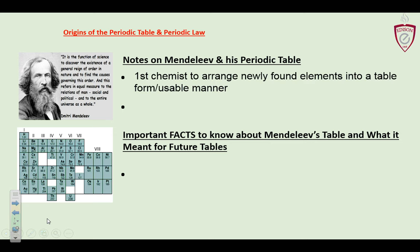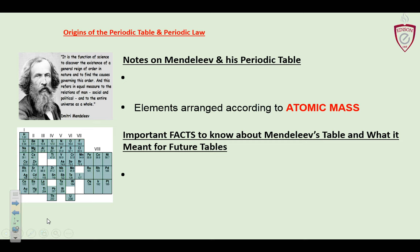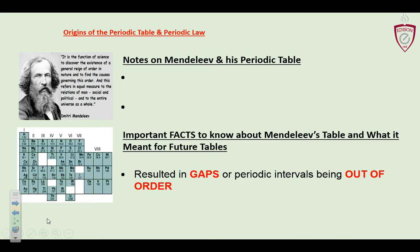So Mendeleev was the first guy to come up with a periodic table. He took all the elements and arranged them in a usable manner. Legend says he loved playing solitaire and he put all the elements on cards and arranged them according to their atomic masses. He left blank spots and predicted the existence of elements that should fill those gaps — which is why he was kind of a big deal.